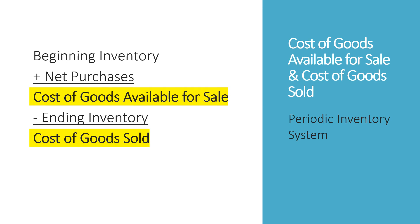Under a periodic inventory system, we compute cost of goods sold by taking our beginning inventory, adding in our net purchases to get a subtotal called cost of goods available for sale. We then subtract out the ending inventory to come down to cost of goods sold. Beginning inventory is the inventory on hand at the beginning of the period. Net purchases is what we have purchased during the period. If we subtract out the ending inventory — which is based on the physical count and represents the goods left at the end of the accounting period — the difference is going to be cost of goods sold.